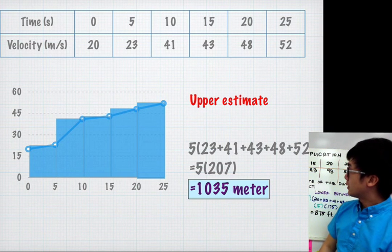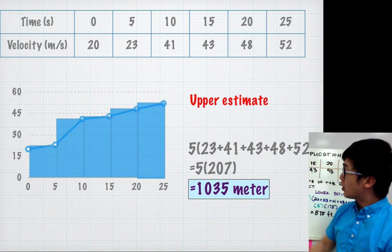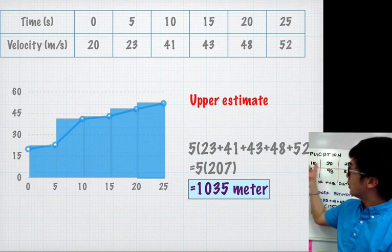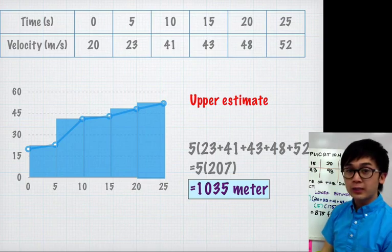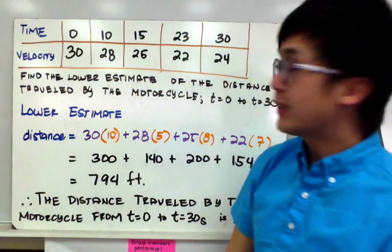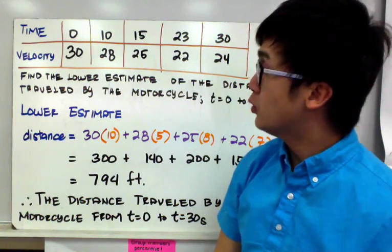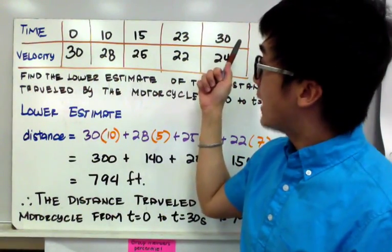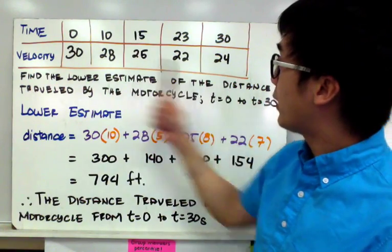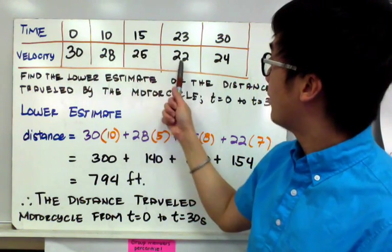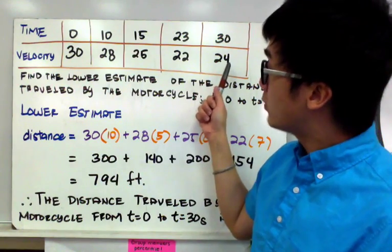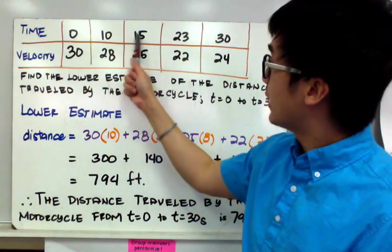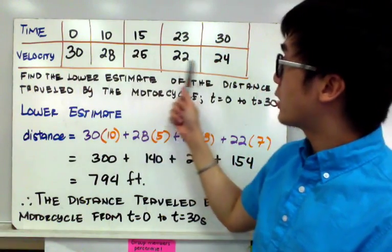Now for a different example, I'm not going to show the graph. We'll rely on the table alone, and this time the time interval will no longer be consistent. The object moves from 0 through 30 seconds, and the recorded velocities are 30, 28, 25, 22, and then 24. The time interval is inconsistent and the velocity is also inconsistent — it goes down from 30 to 28, to 25, to 22, and then back up to 24.